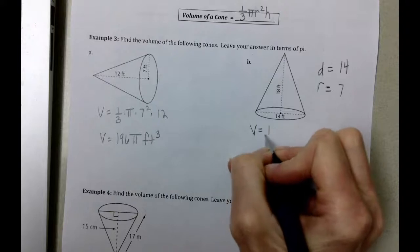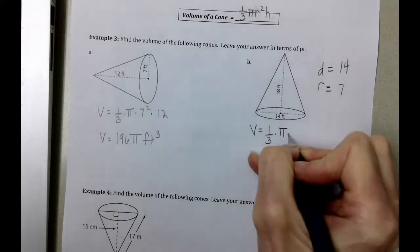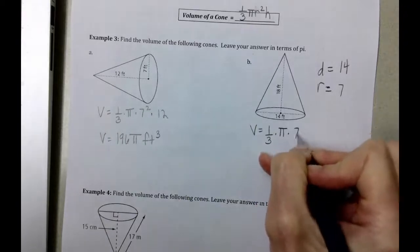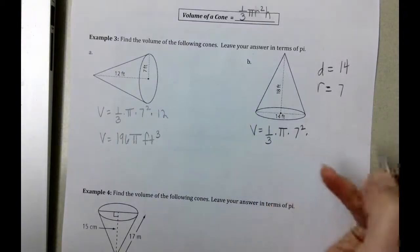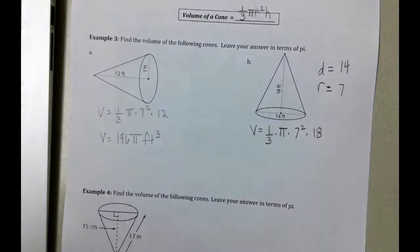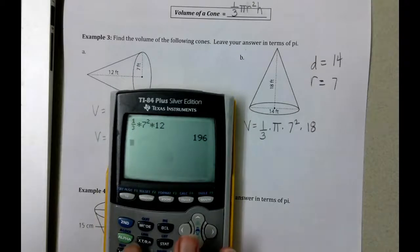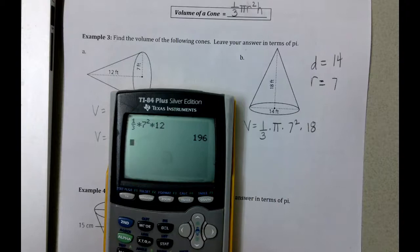The volume equals one-third times pi, and again we've got the 7, and then this time our height of our cone is 18. We barely have to change anything that we multiplied from the last problem. The only thing that I need to change is the 18.